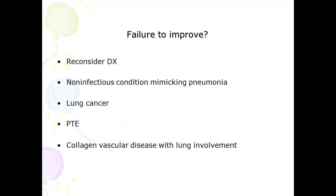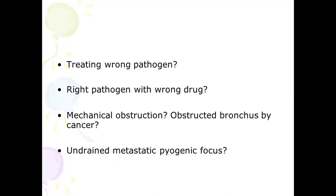If there is failure to improve after empirical treatment, you should reconsider the diagnosis. It could be a non-infectious condition mimicking pneumonia — such as lung cancer, pulmonary thromboembolism, or collagen vascular disease with lung involvement. Or it could be pneumonia but you may be treating the wrong pathogen or using the right pathogen with the wrong drug. Other factors include mechanical obstruction — such as a cancerous mass causing bronchial obstruction leading to pneumonia — or an undrained metastatic pyogenic focus.